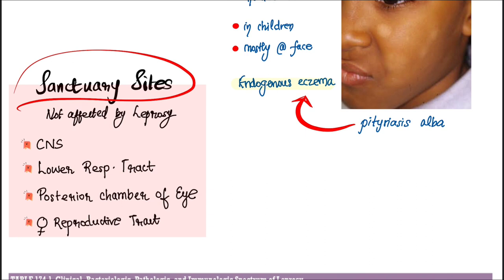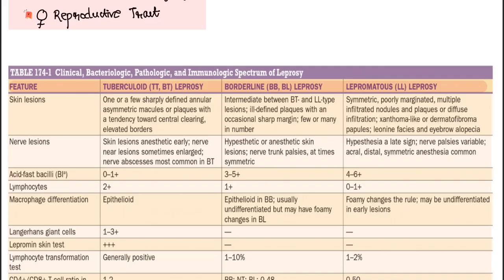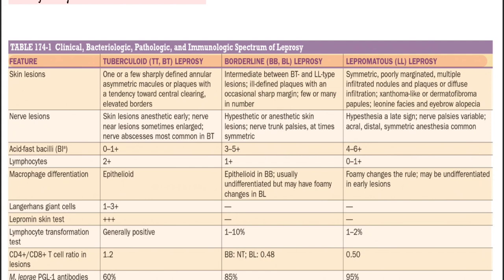The sanctuary sites where Mycobacterium leprae does not infect or affect are: the CNS, lower respiratory tract (lungs), posterior chamber of the eye, and the female reproductive tract. A summary table with all the discussed information in tabulated format covers the tuberculoid, borderline, and lepromatous leprosy features.